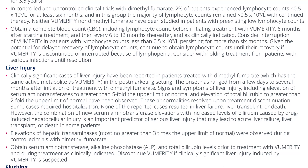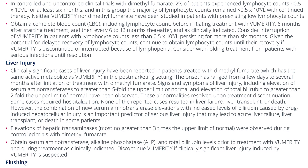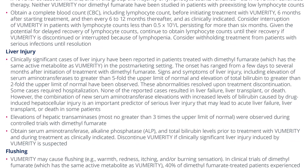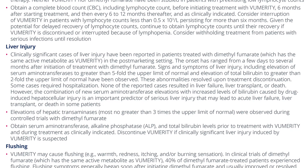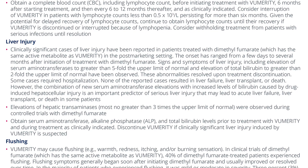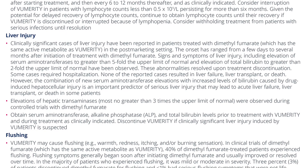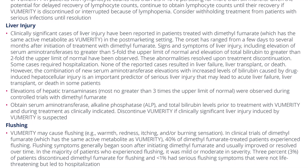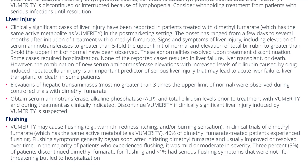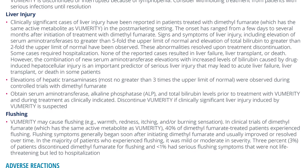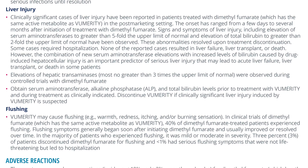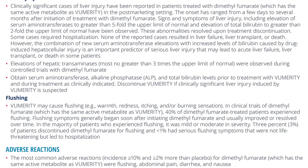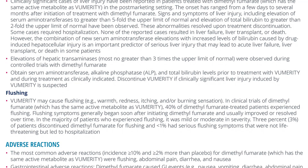Liver Injury: Clinically significant cases of liver injury have been reported in patients treated with dimethyl fumarate, which has the same active metabolite as Vumerity, in the post-marketing setting. Onset ranged from a few days to several months after initiation. Signs and symptoms have included elevation of serum aminotransferases to greater than five-fold the upper limit of normal and elevation of total bilirubin to greater than two-fold the upper limit of normal. These abnormalities resolved upon treatment discontinuation, and some cases required hospitalization. None resulted in liver failure, liver transplant, or death. However, the combination of new serum aminotransferase elevations with increased bilirubin caused by drug-induced hepatocellular injury is an important predictor of serious liver injury that may lead to acute liver failure, liver transplant, or death in some patients.